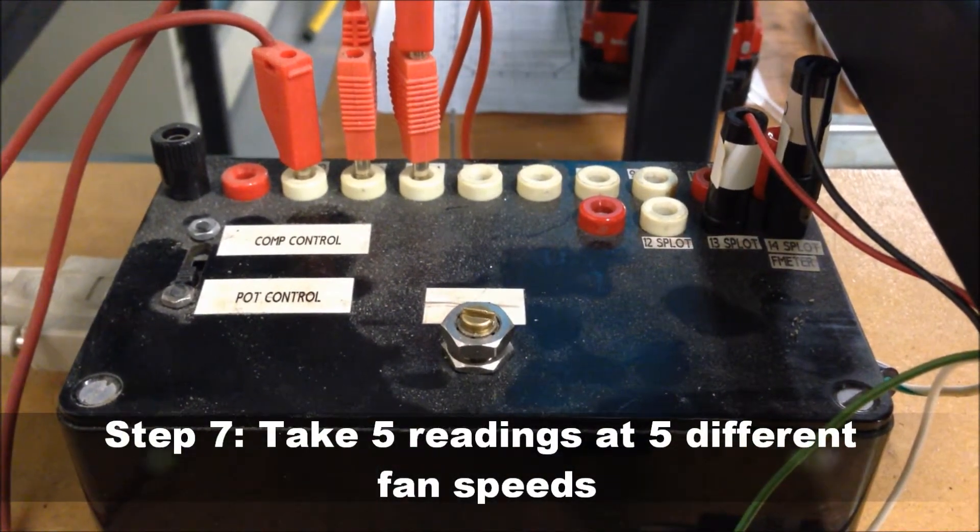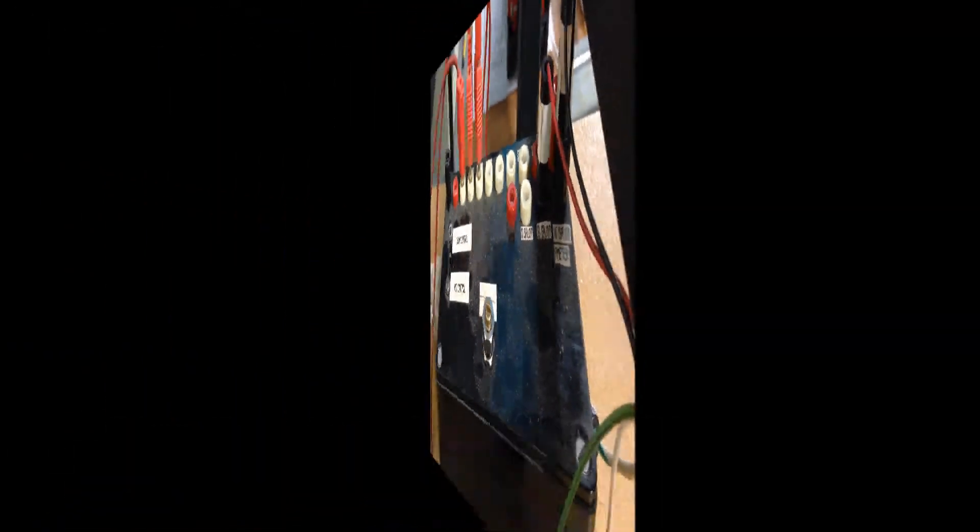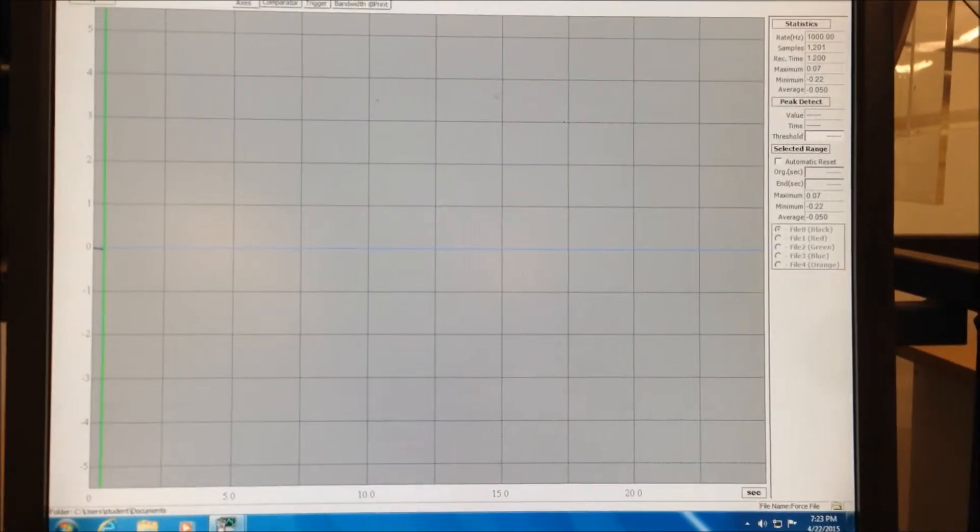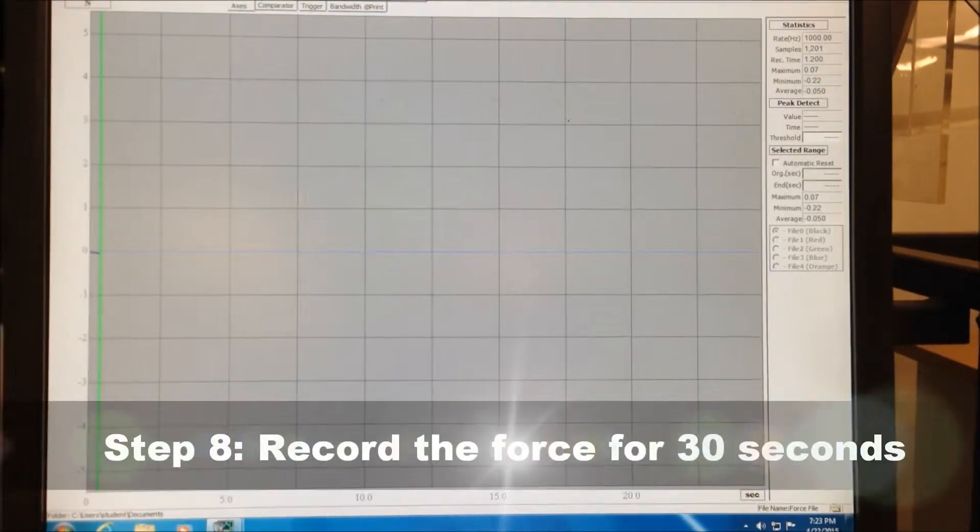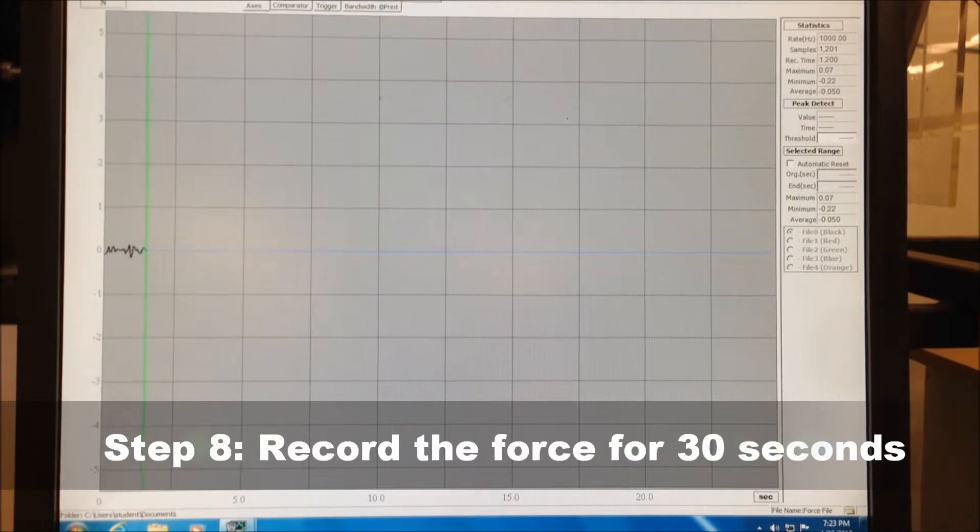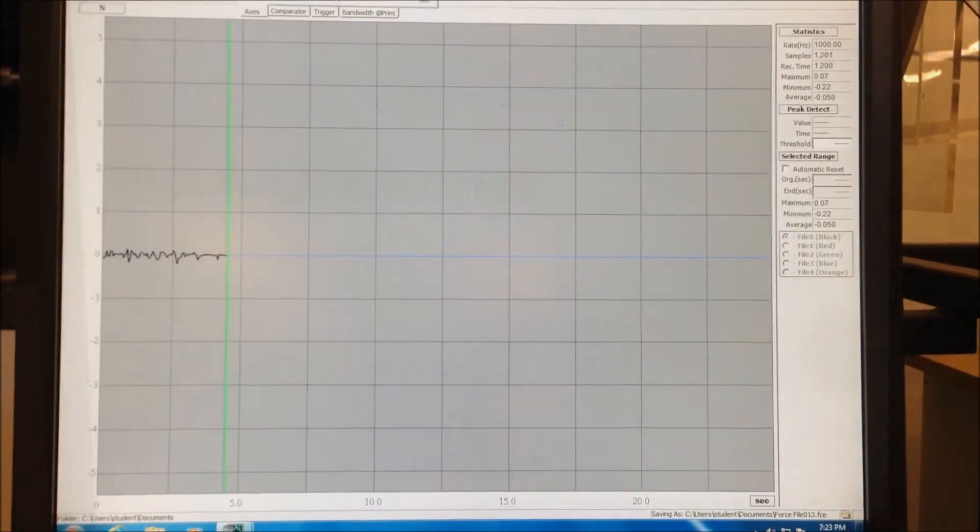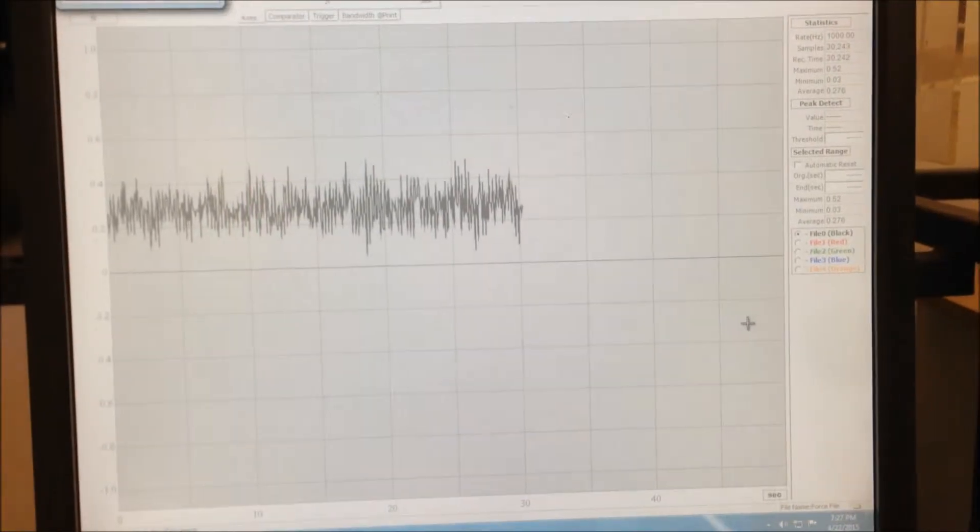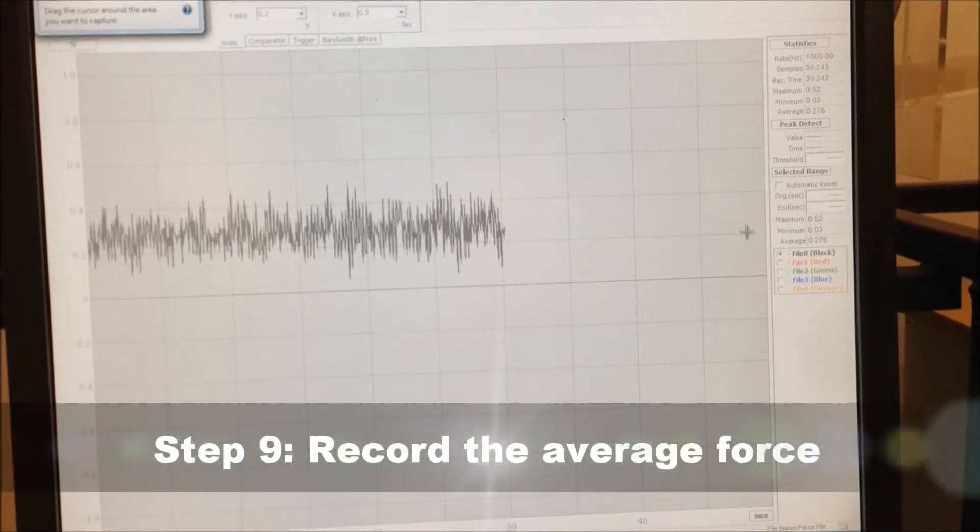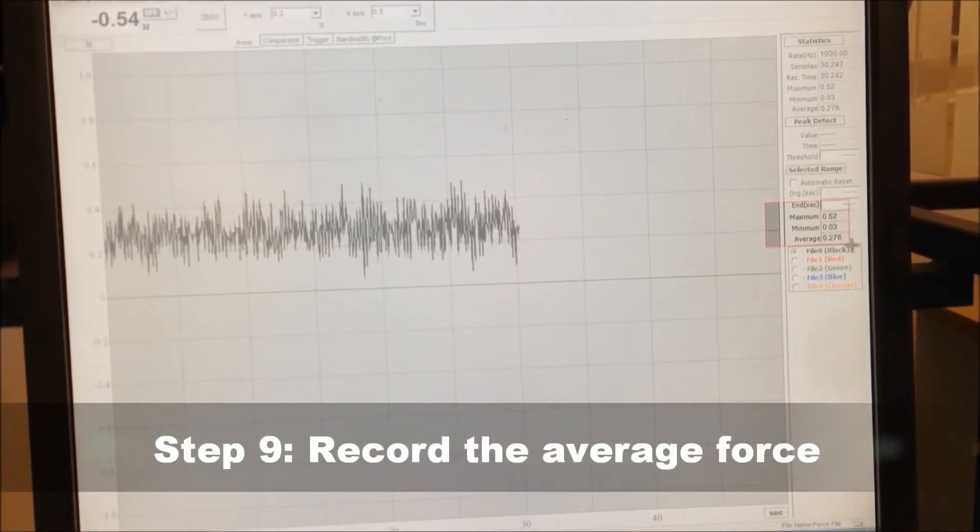Take five different measurements at five different fan speeds. Once your partner has achieved a stable pressure reading, begin viewing and recording the force over a 30-second interval. After this 30-second interval, note and record the average force value.